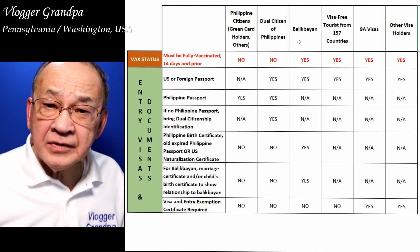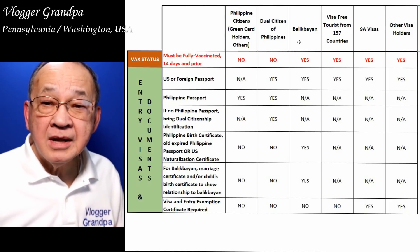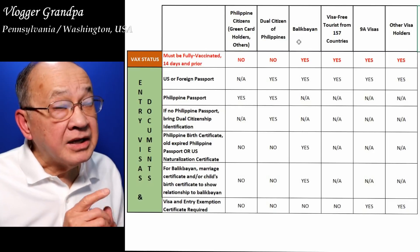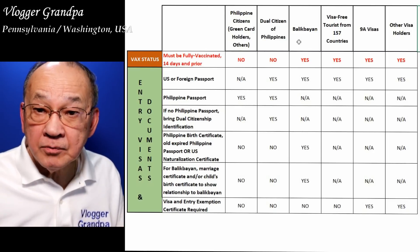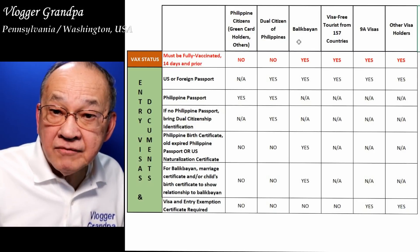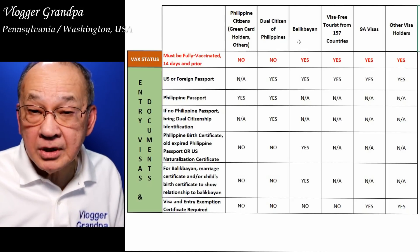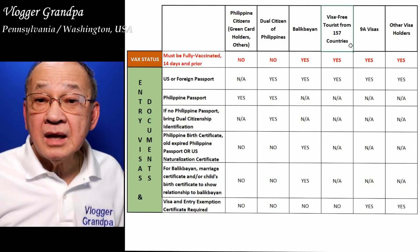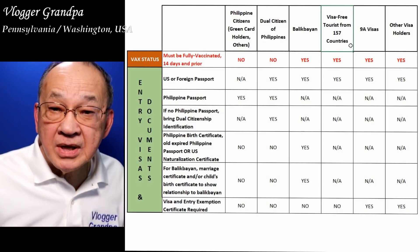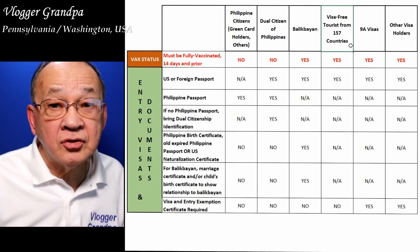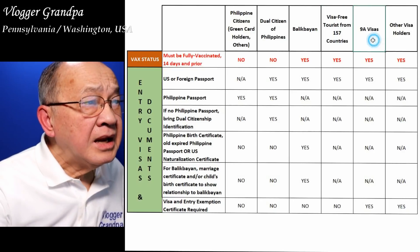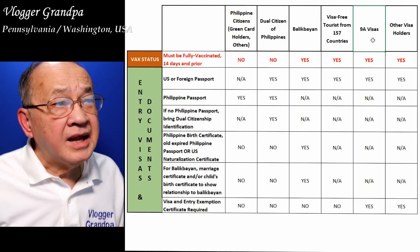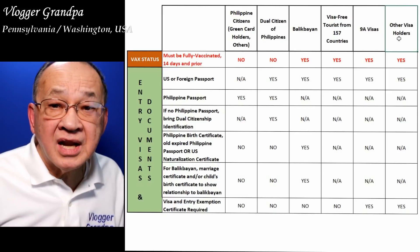Who are the Balikbayans? Balikbayans are Filipinos who became U.S. citizens and therefore are no longer Filipino citizens. But the Philippines gives you the privilege of coming back as a former Filipino citizen — they call that Balikbayan. That includes your spouse, foreign spouse, or foreign children. Now, visa-free tourists are tourists coming from 157 countries allowed to visit the Philippines without a visa. They'll be granted a visa at the airport for 30 days, initially, but usually extendable. 9A visas are issued to people outside those 157 countries who cannot come in visa-free. And then we have all other visas such as SRRV, 13A, etc.